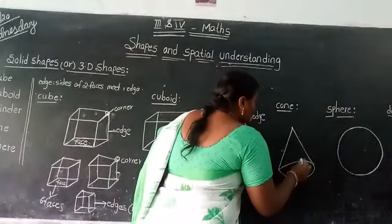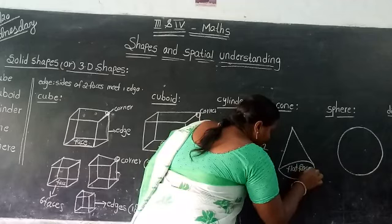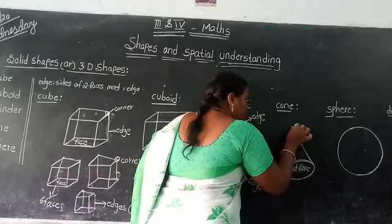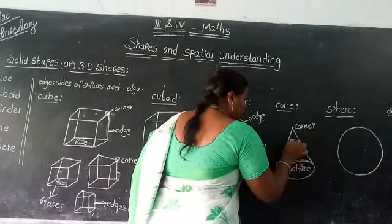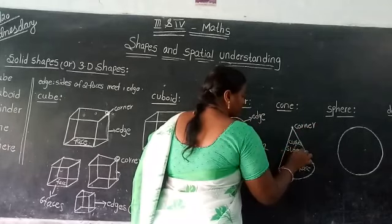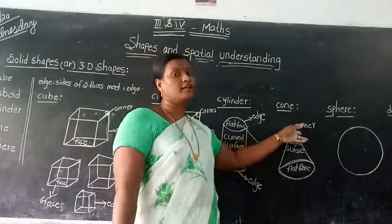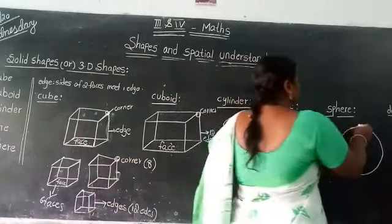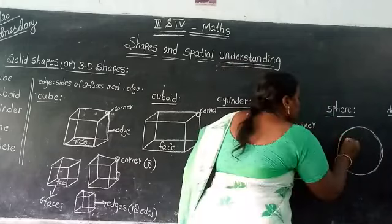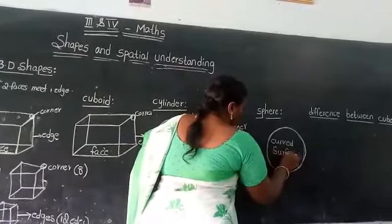A cone has 1 flat face which is circular in shape, and 1 curved surface. A sphere has no corners and no edges — only a curved surface. This is the curved surface of the sphere.